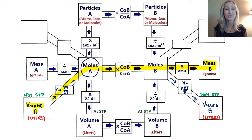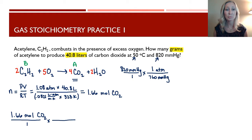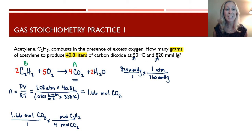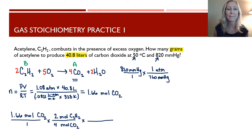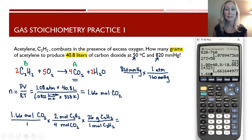Next, convert moles of CO₂ to moles of acetylene using the mole ratio from the balanced equation: 4 moles of CO₂ are produced for every 2 moles of acetylene. So 1.66 moles of CO₂ × (2 mol C₂H₂ / 4 mol CO₂) converts us to moles of acetylene. The molar mass of C₂H₂ is 26 g/mol (two carbons at 12 g each = 24, plus two hydrogens = 26).